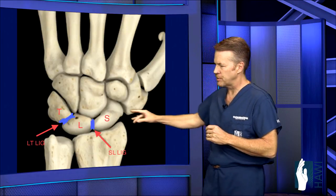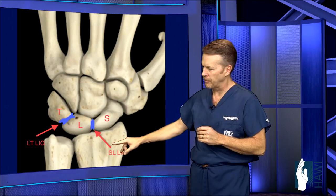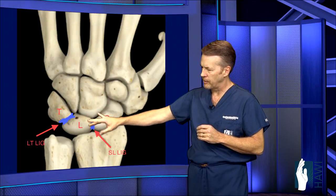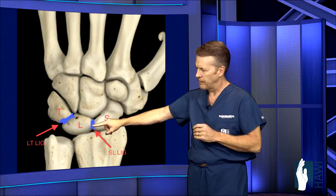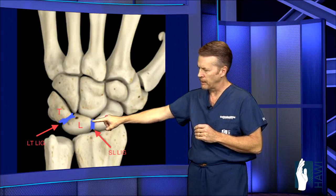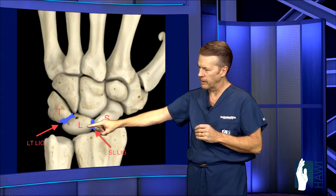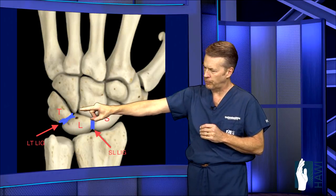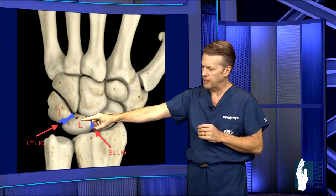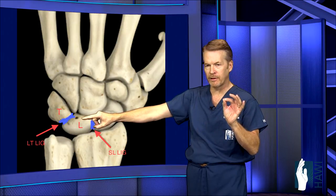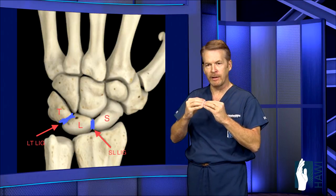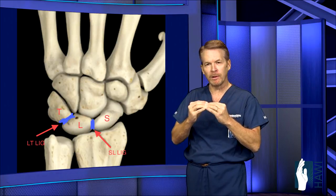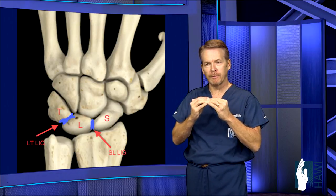Now let's look at the anatomy of the wrist. This shows the carpal bones right here, the forearm bone — the radius — and the ulna over to the left-hand side. You can see the scaphoid bone here, this blue ligament called the scapholunate ligament between the lunate and the scaphoid, and over between the lunate and the triquetrum is the lunotriquetral ligament. These are one-millimeter-thick ligaments that tether these three bones together — very important structures, but the most frequently torn ligaments in the wrist.